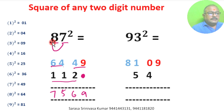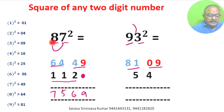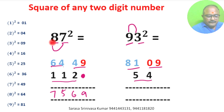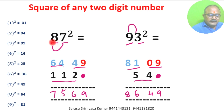93 square again: square of 9 is 81, square of 3 is 09. 3 times 9 is 27, into 2 is 54. We don't write anything in units place. 9, 0 plus 4 is 4, 1 plus 5 is 6, 8. Square of 93 is 8649.